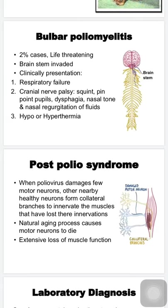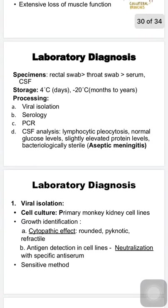Looking at post-polio syndrome: following poliovirus infection, the damaged motor neurons innervating skeletal muscle are compensated by healthy surrounding neurons forming collaterals. For a time the patient is okay. However, after two to three decades, due to natural aging, these motor neurons die and the patient suffers from extensive loss of muscle function. This is post-polio syndrome.